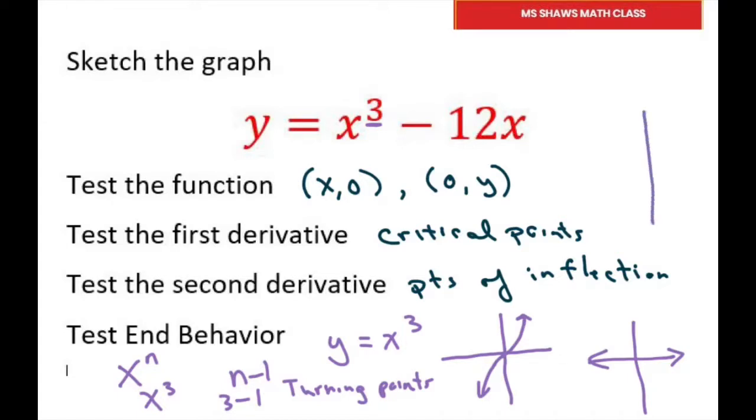So our graph could start in here, turn in here, turn. So it turns twice. Sometimes it only turns once. In this case, right here, it didn't turn. It just has a point of inflection.